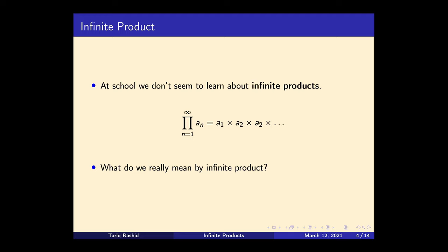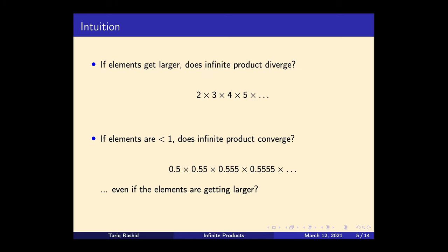It's natural to ask what we mean by an infinite product. Do we mean that as we multiply more and more terms it approaches a finite value? Let's delay answering that and think through a few examples. Here's a very simple one: 2 times 3 times 4 times 5 times 6 times 7 and so on, where the numbers get larger by 1. Most people would agree intuitively this diverges — it just gets bigger and bigger because the numbers in the sequence get larger and larger, and therefore the product gets larger and larger.